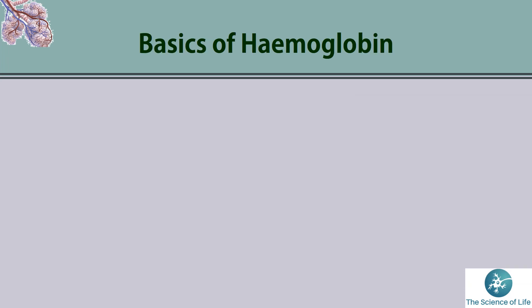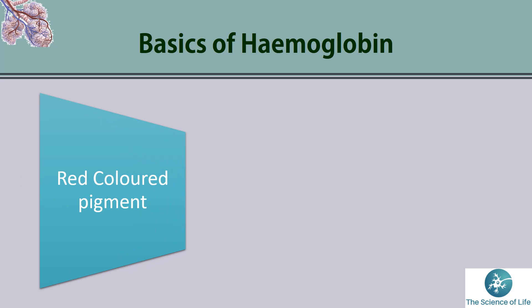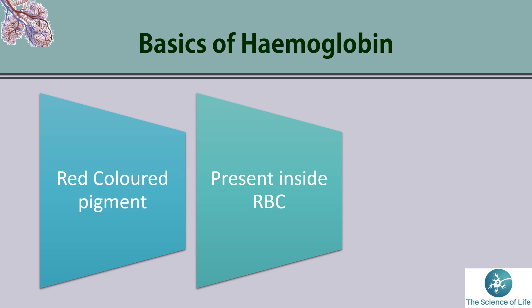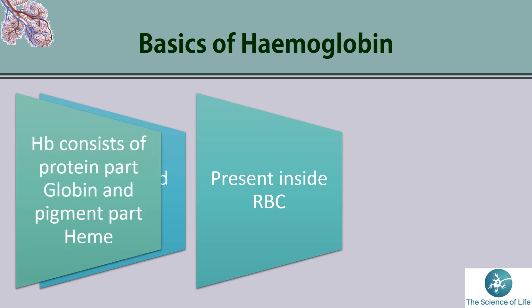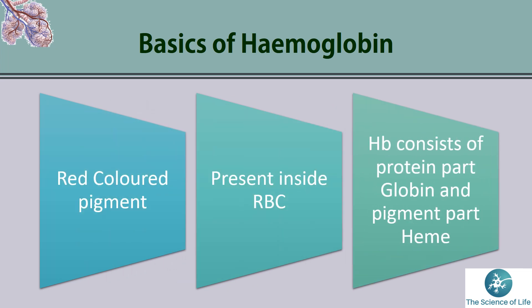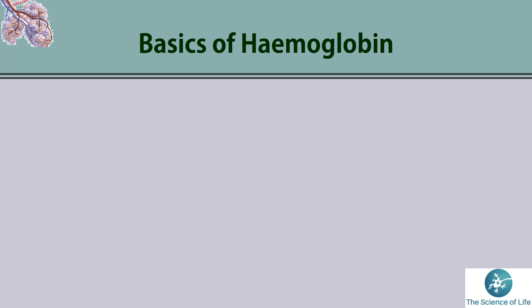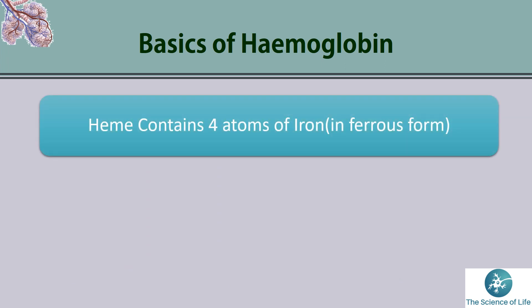Basics of Hemoglobin: Hemoglobin is a red colored pigment present inside the RBCs. Hemoglobin consists of two parts — the protein part, which is known as Globin, and the pigment part, which is known as Heme. Heme contains 4 atoms of iron, and this iron is in ferrous form, that is Fe²⁺.